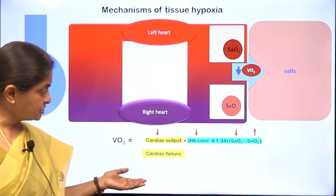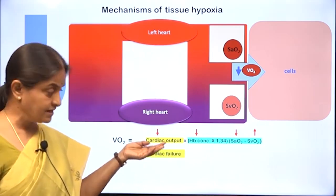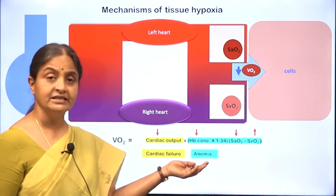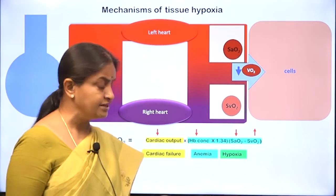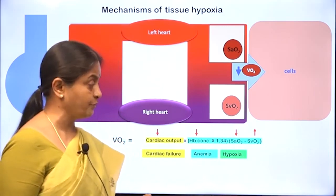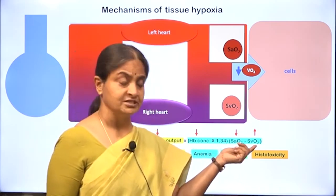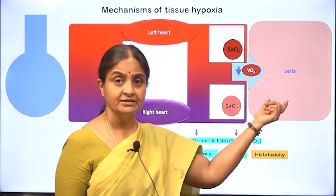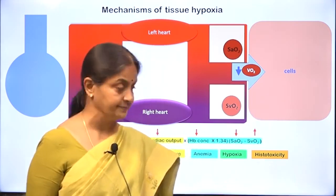These conditions correspond to specific clinical states. A reduction in cardiac output is cardiac failure — stagnant hypoxia. A decrease in hemoglobin concentration is anemia — anemic hypoxia. A decrease in arterial oxygen saturation is hypoxia in blood — hypoxic hypoxia. An increase in venous oxygen saturation, where cells do not extract enough oxygen due to a problem within the cells, corresponds to tissue toxicity — cytotoxicity or histotoxicity — giving histotoxic hypoxia.